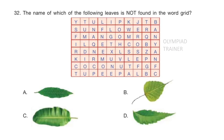Question 32: The name of which of the following leaves is not found in the word grid? If you look at the word grid carefully, you can see banyan, neem, and mango are there. But option C — banana — is not there. So the answer is option C.